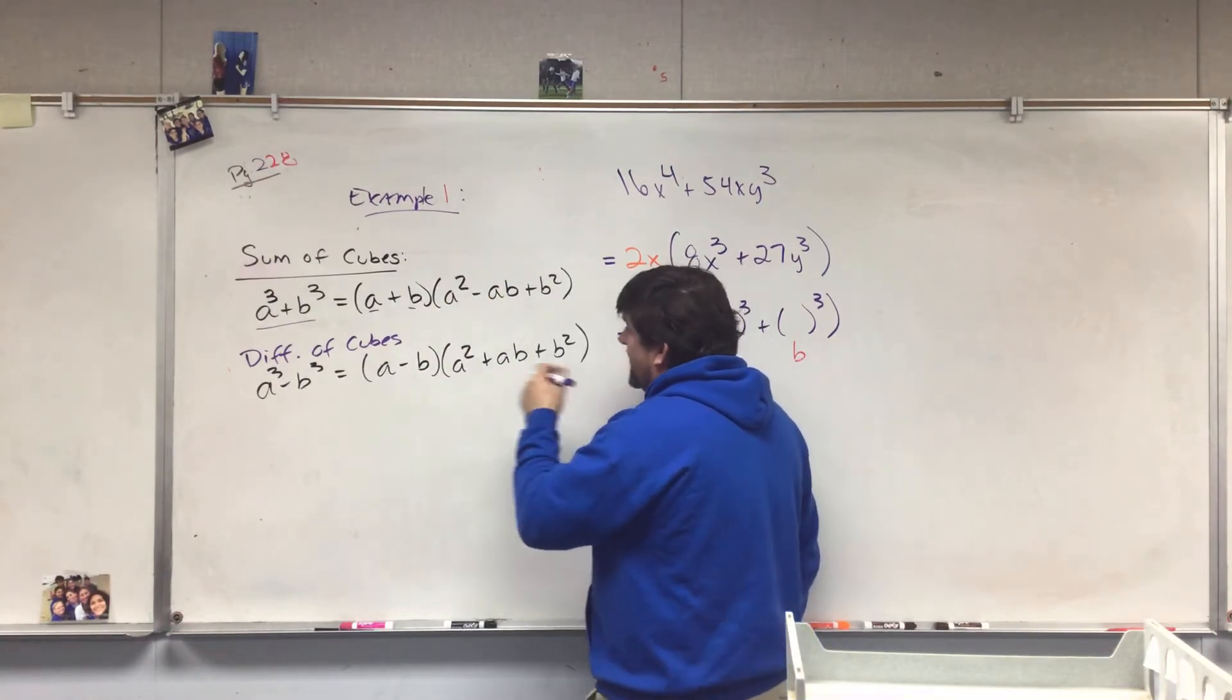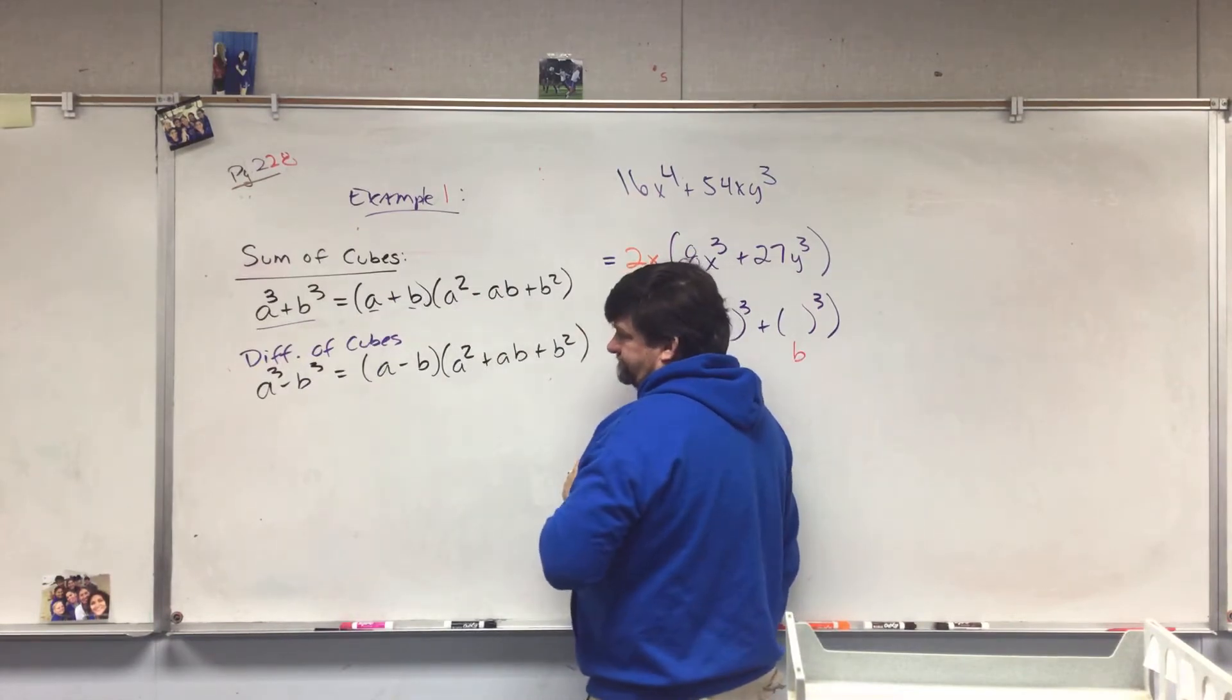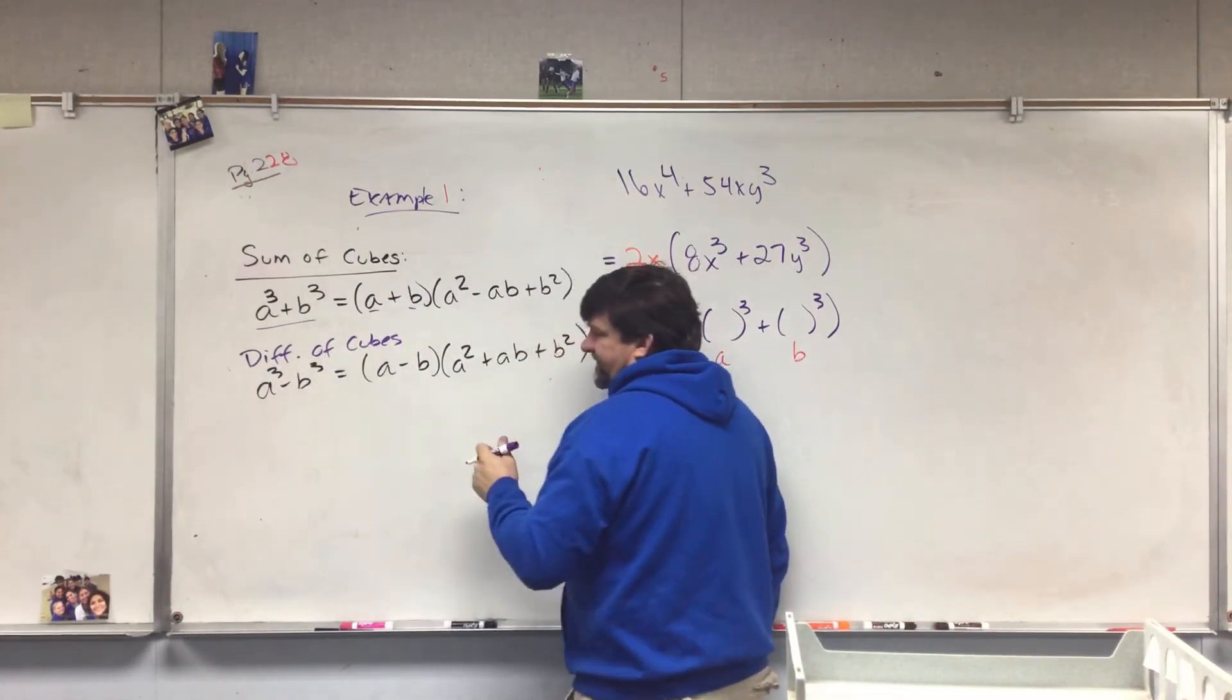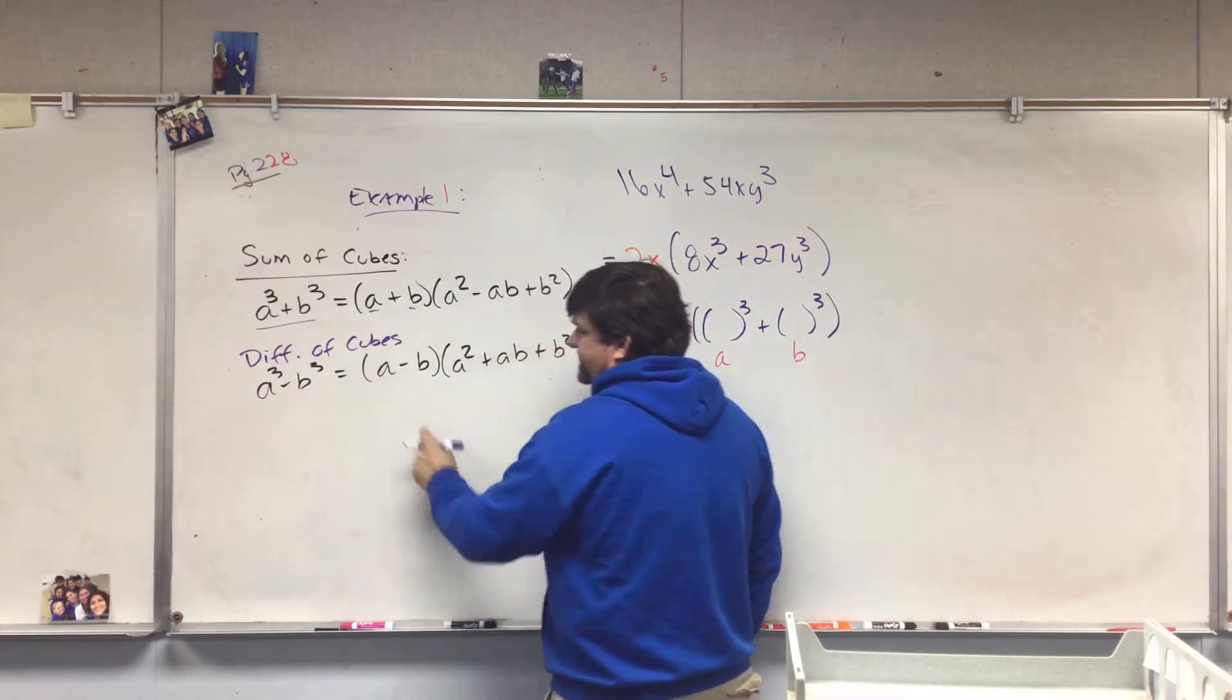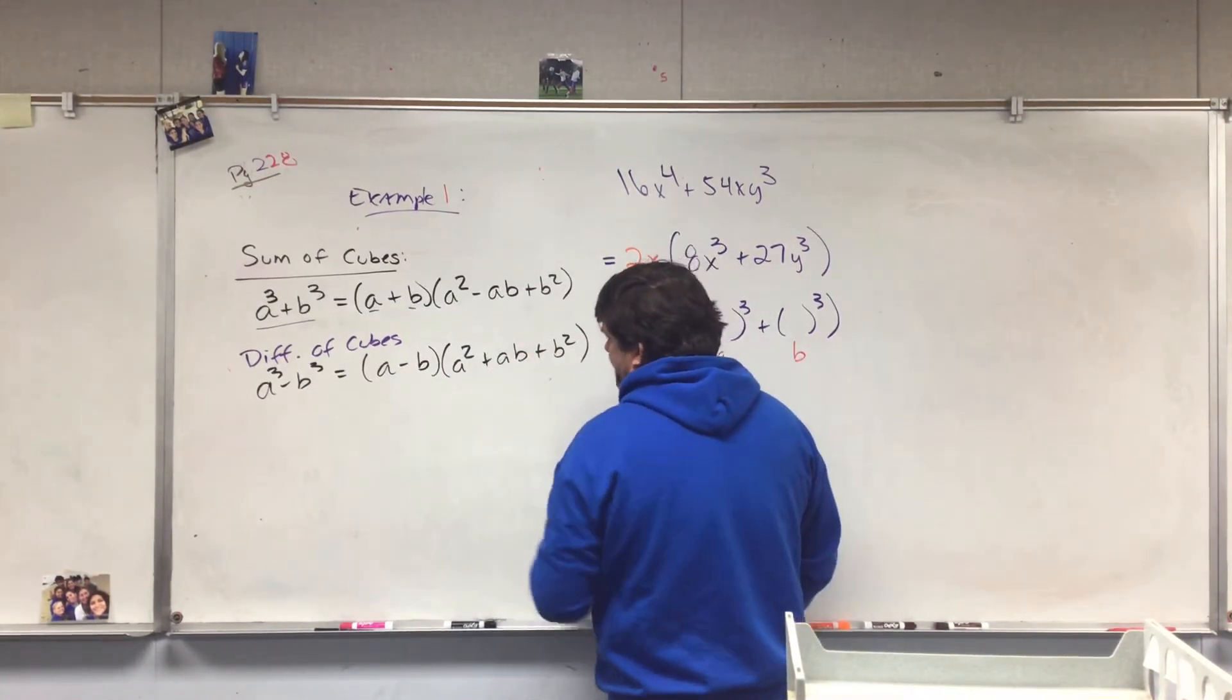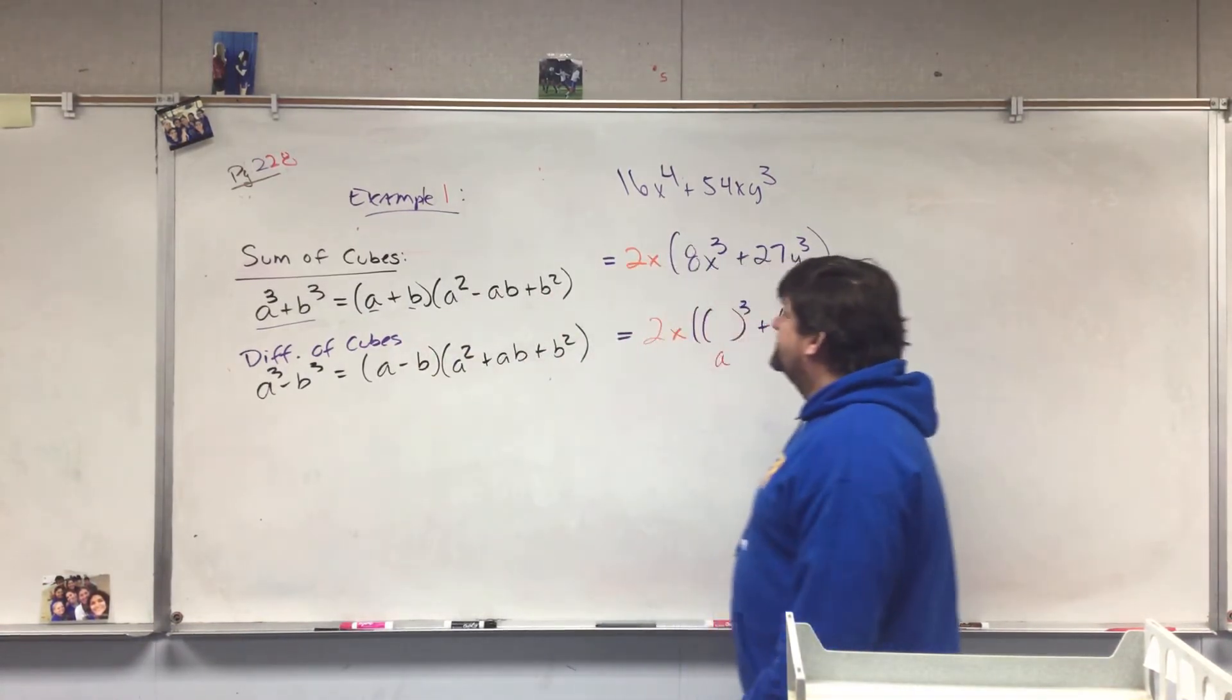When it's a positive, the positive always goes first and the negative goes second. Same thing with difference of cubes: a goes here, b goes here, but since it's subtraction, subtraction goes first, positive goes second, and then they're always positive at the end.